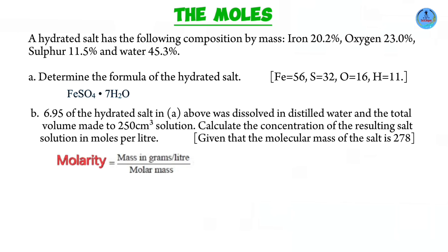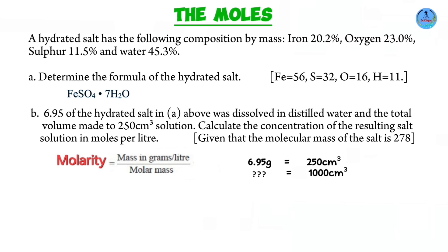We're going to use the formula: molarity equals mass in grams per liter over the molar mass. The molar mass is 278. For the mass in grams per liter, we need the mass dissolved in one liter, equivalent to 1000 cubic centimeters. From the problem, 6.95 grams was dissolved in 250 cubic centimeters. Cross multiplying to find the mass in 1000 cubic centimeters gives us 27.8 grams per liter.